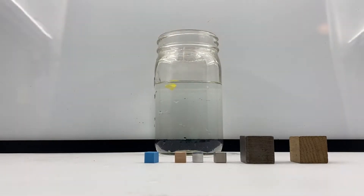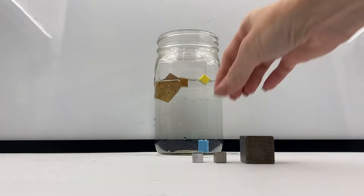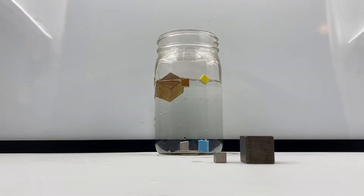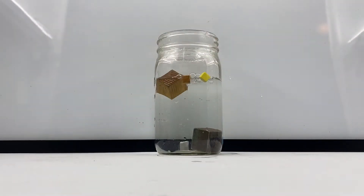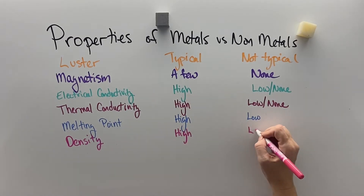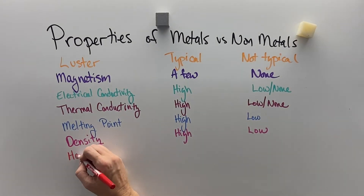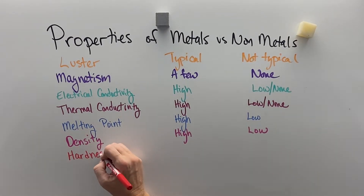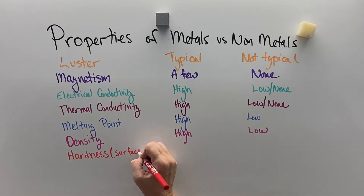Density is another property — whether things will float and sink, how heavy they are per volume. Metals tend to be very dense and non-metals tend to not be very dense. So depending on whether you need something heavy or light, you would look at that property and choose a metal or a non-metal.